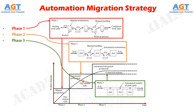This strategy with the three phases is illustrated in this figure. Here we can see a typical automation migration strategy, where Phase 1 shows manual production with single independent workstations, Phase 2 shows automated production stations with manual handling between stations, and Phase 3 shows automated integrated production with automated handling between stations. The keyword AUT represents automated workstation.